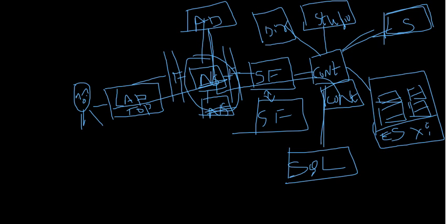The controller checks with the SQL database for the resources available to that particular user. If the user is assigned a VDI or virtual desktop machine, the controller retrieves that information from the SQL server, communicates with the virtual machines, and serves those machines to the end user.